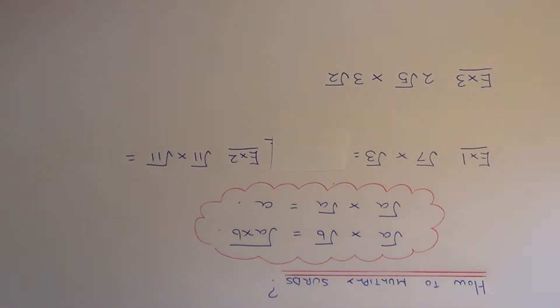Today I'm going to show you how to multiply two surds together. There are two rules to follow. If you have root A times root B, you'll get the answer root A times B.